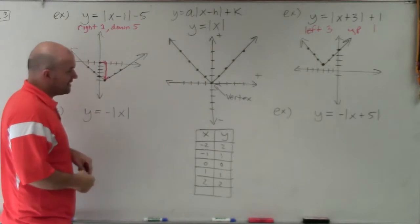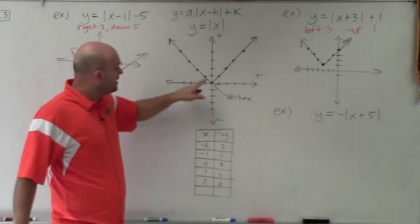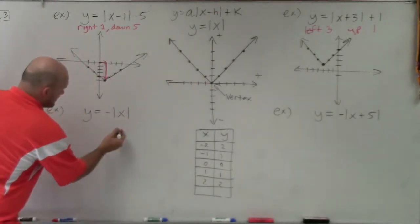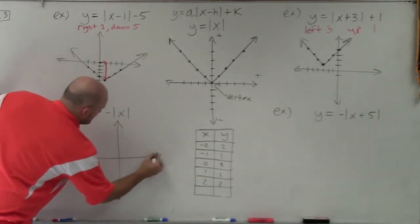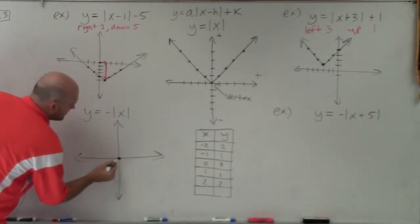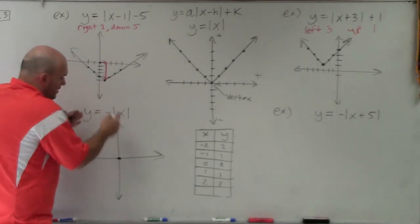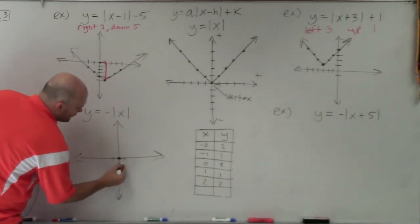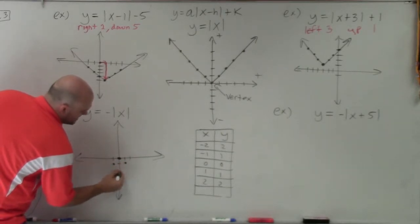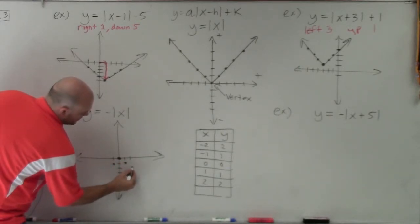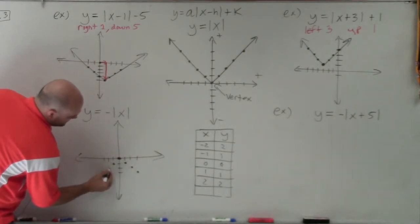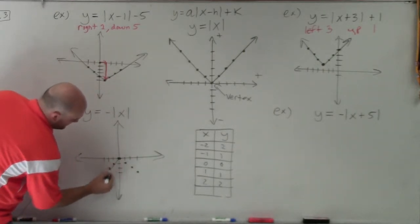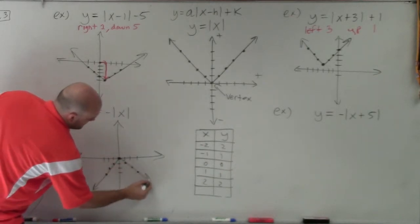Here, we don't have any transformations except for the negative. That means I'm not moving left or right — my vertex is still going to be at (0, 0). As I mentioned, instead of going over 1, up 1, I'm now going to go over 1, down 1; over 1, down 1. Just follow through with that pattern.